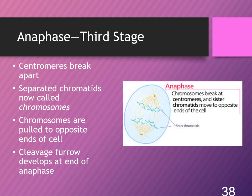Anaphase is the third stage of mitosis. During anaphase, the centromeres break apart at the center of the chromatids and each identical copy of the chromosome is pulled to the opposite ends of the cell. This is also where we see the beginning of the cleavage furrow — a little indent where the cells are starting to define themselves as two identical daughter cells.